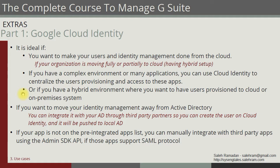The third point is related to the first: if you have a hybrid environment where you want users provisioned to cloud and/or on-premise systems, you can use Google Cloud Identity by integrating it with other applications and identity management solutions. For example, you can integrate with Active Directory using Google partners to manage user provisioning. Using GCDS you can sync from Active Directory to Google, but with Cloud Identity you also have the option to sync in the opposite direction — from Google to Active Directory.